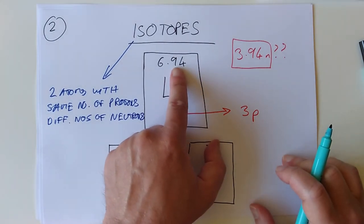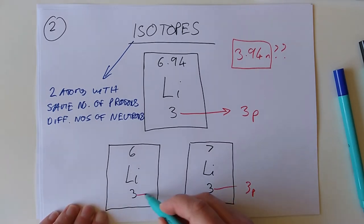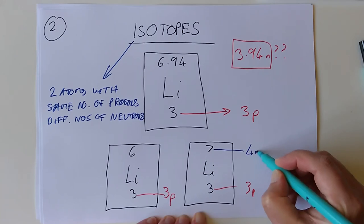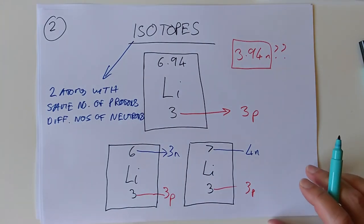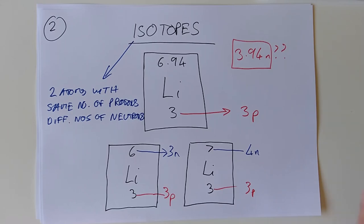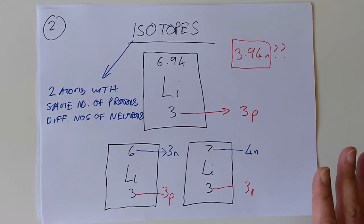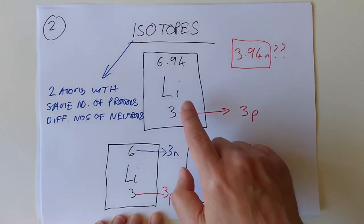It turns out this mass number is not fixed in stone. We've got two different isotopes of lithium here. They both have three protons, but this one has four neutrons and this one has three neutrons. What difference does that make chemically? It certainly behaves the same chemically. It can have an effect on whether the atom is radioactive or not, and that's something we'll look at later in National 5 Chemistry. We'd come across nuclide notation before — we just hadn't come across isotopes.